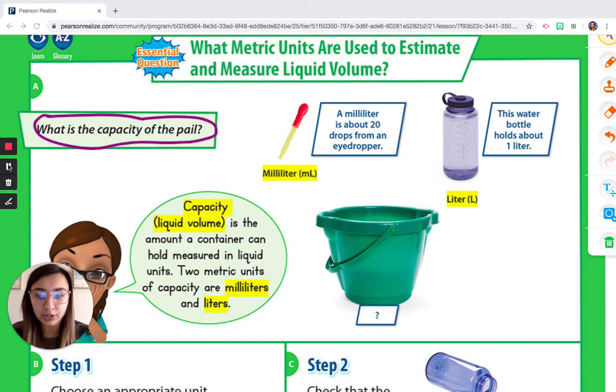So what it wants us to do is find the capacity of this pail right here. So it says capacity or liquid volume is the amount a container can hold measured in liquid units. Two metric units of capacity are milliliters and liters.